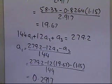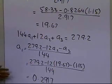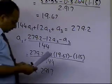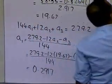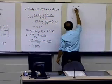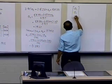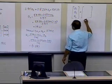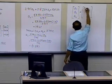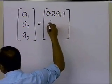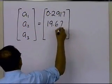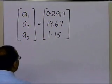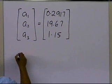We now have all the values we need: a1, a2, and a3. The solution vector found using the back substitution algorithm is a1 equals 0.2917, a2 equals 19.67, and a3 equals 1.15.